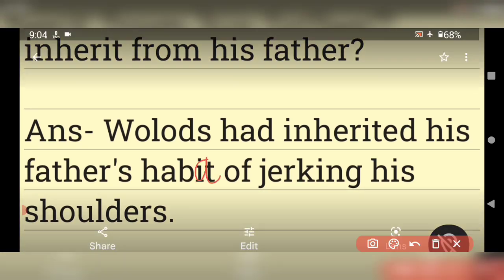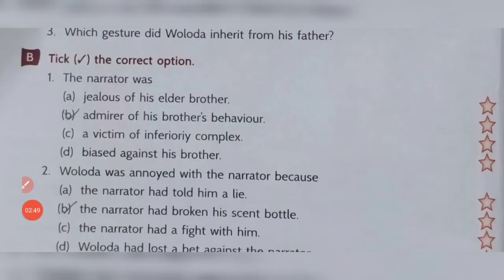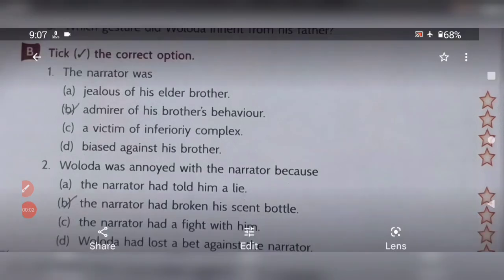Now moving to question B: Tick the correct option. Four options are given and you have to tick the appropriate one. First question: The narrator was — option A: jealous of his elder brother; option B: admirer of his brother's behavior; option C: a victim of inferiority complex; option D: biased against his brother. The answer is option B — admirer of his brother's behavior.